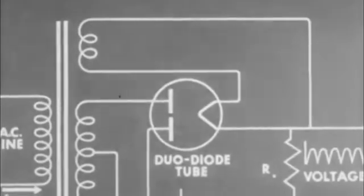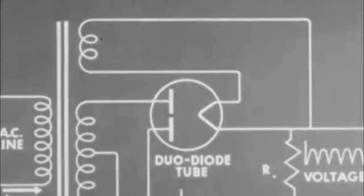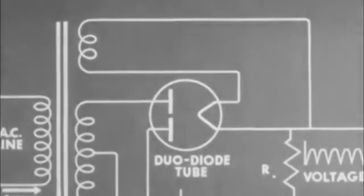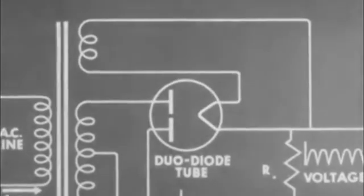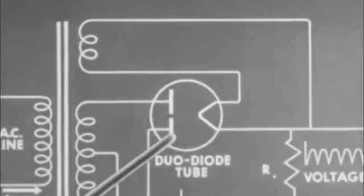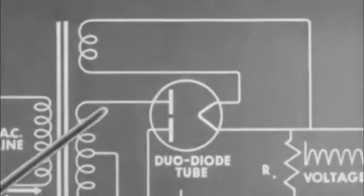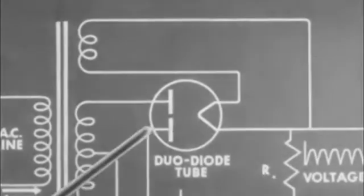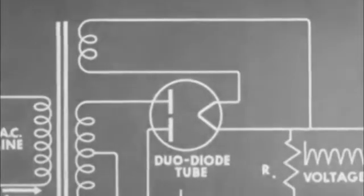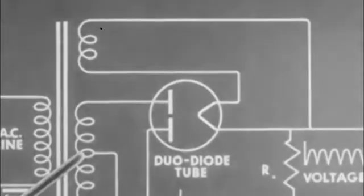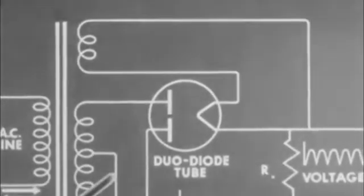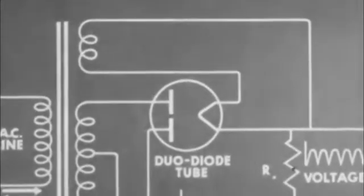For full wave rectification, the duo diode tube is attached to a transformer in much the same way as was the diode. The two plates are attached to one of the transformer windings. Either plate of the tube is part of a circuit extending through a portion of one of the transformer windings, out through a center tap, and around to the filament.